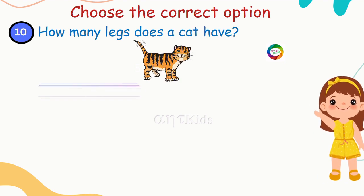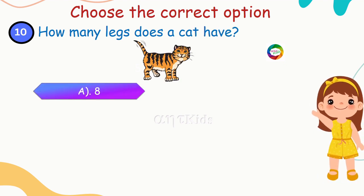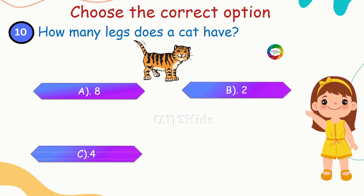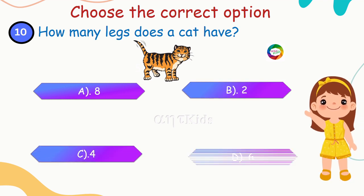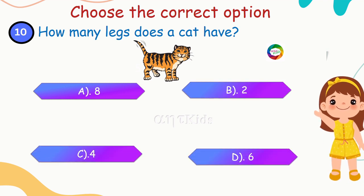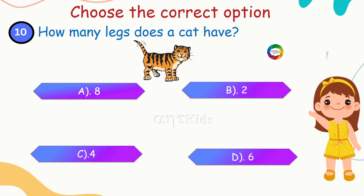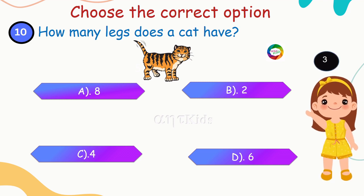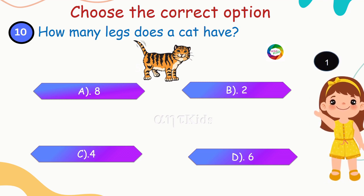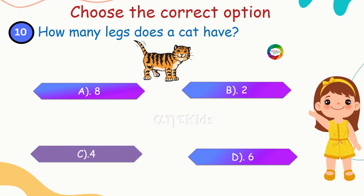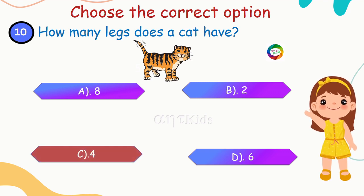Next question: how many legs does a cat have? Options are: eight, two, four, six. Yes, you're right — four!